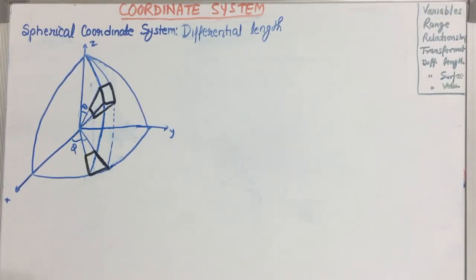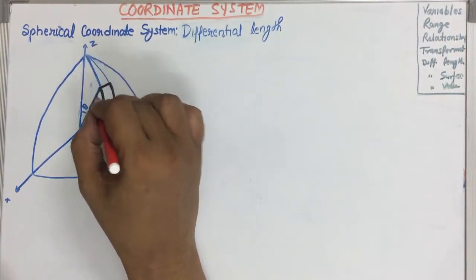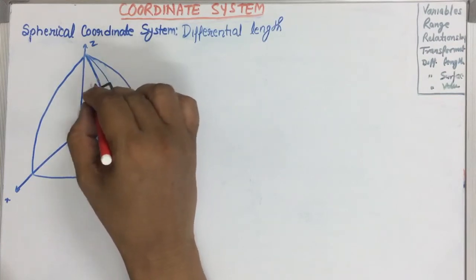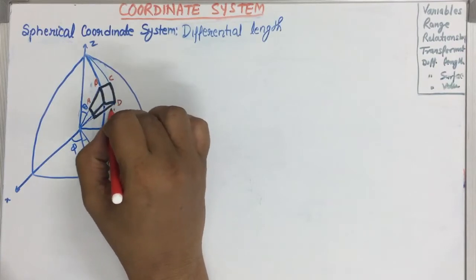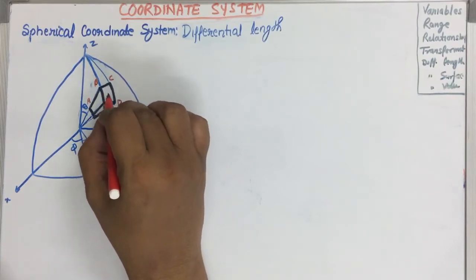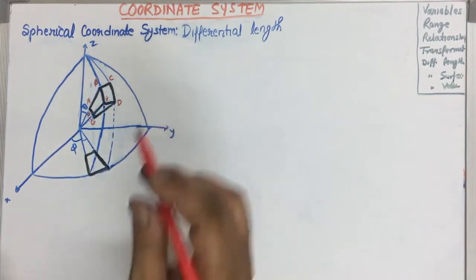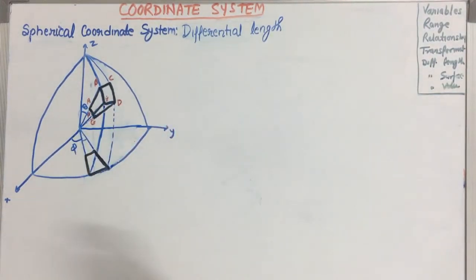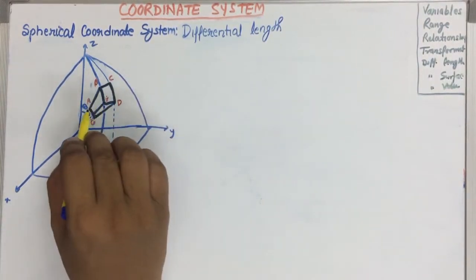So in this case, just name the differential object A, B, C, D, E, F and G. To find the differential length, just take the maximum possible length displaced by this object — that we can assume to be AD.